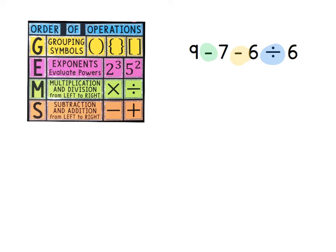I don't have any grouping symbols. I don't have any exponent problems. So which do we do first? Subtraction or division? Hopefully you realize that division is going to come first. So let's work through the problem. 9 minus 7 minus and here's my first problem. 6 divided by 6. 6 divided by 6 is 1.